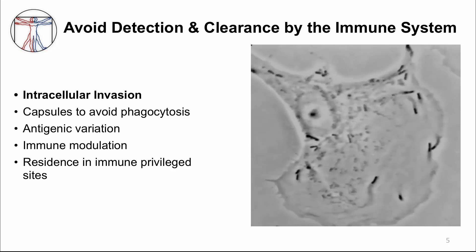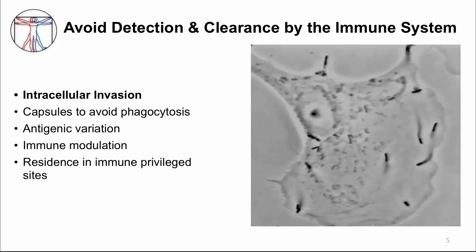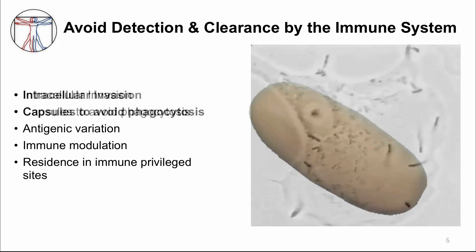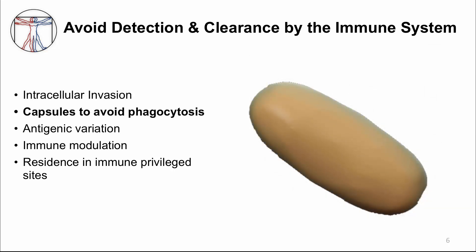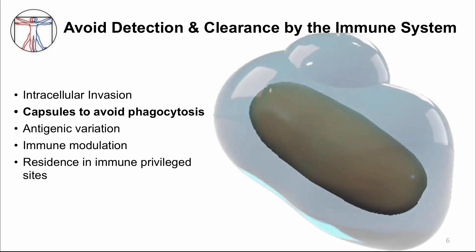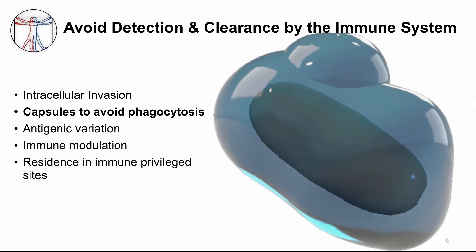Instead of hiding within a cell, some bacteria produce mucopolysaccharide capsules that surround and hide them. Capsules prevent white blood cells from engulfing or phagocytosing bacteria, and prevent antibodies and complement from attaching to and clearing bacteria.